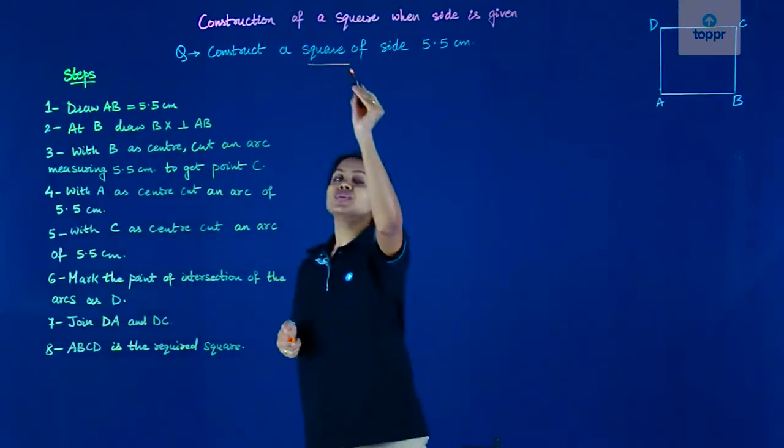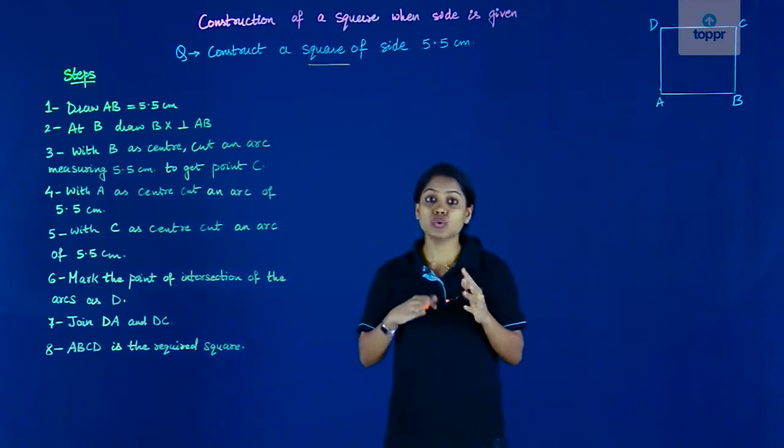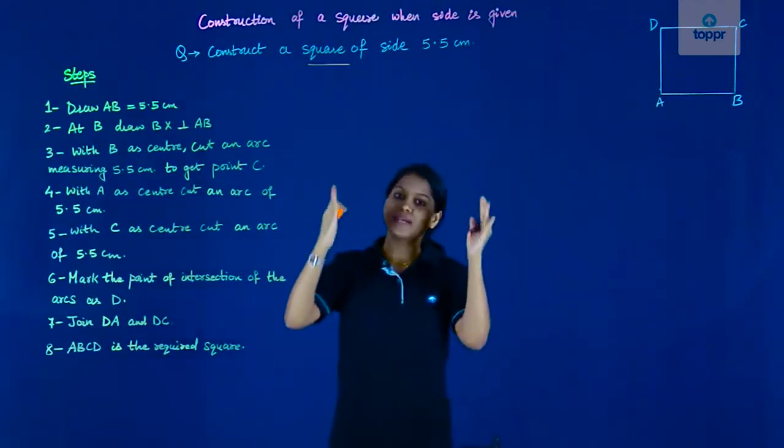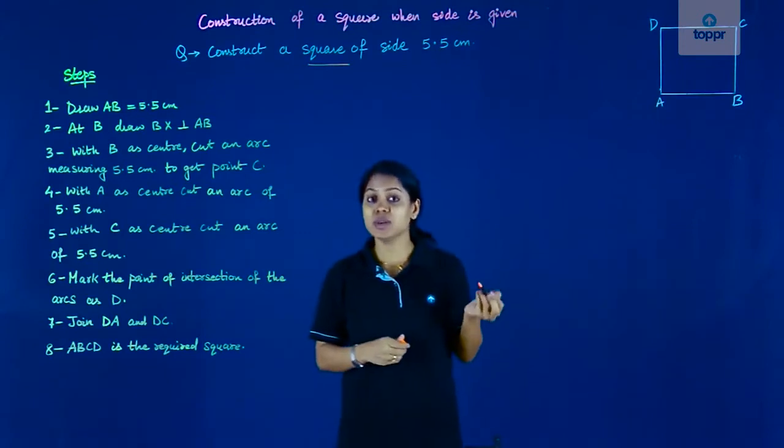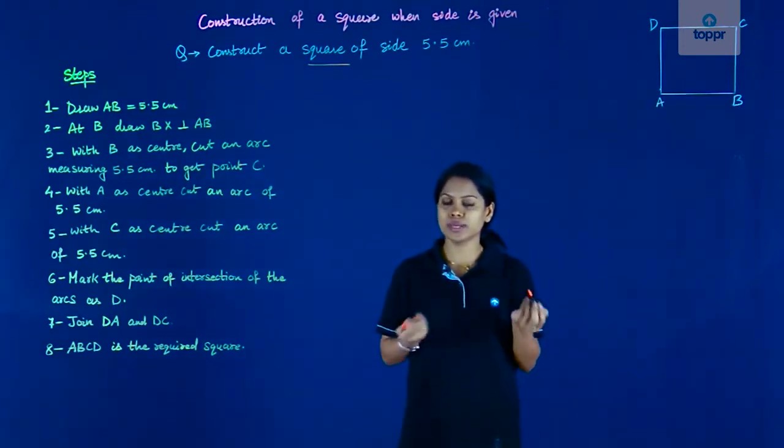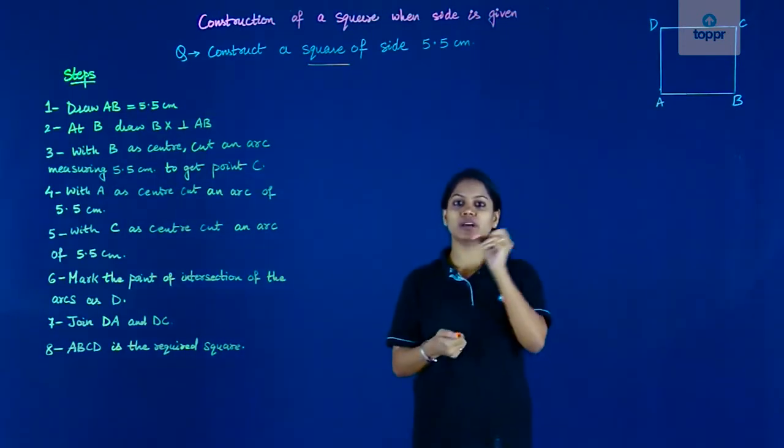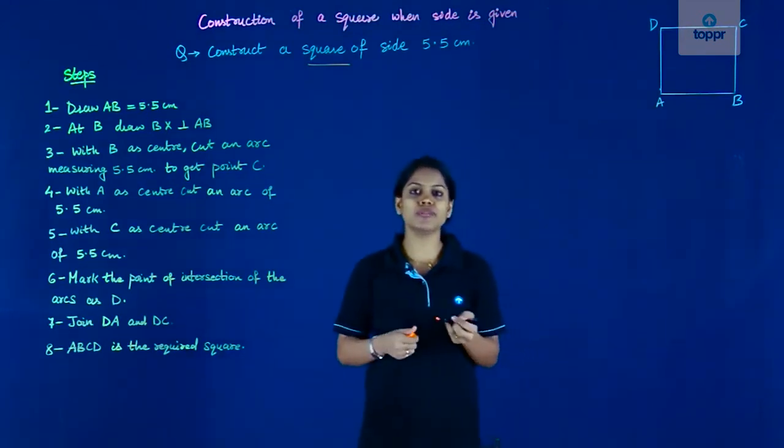It says a square. As soon as you hear the word square, you know so much about a square. You know that in a square all sides are equal to each other, plus all angles of a square are 90 degrees. Each angle is 90 degrees. So that's a lot of information, isn't it?